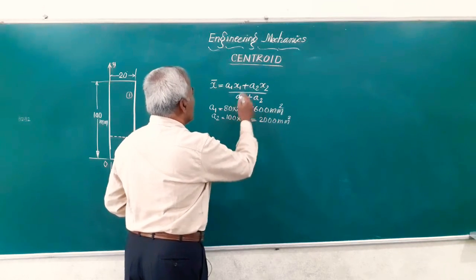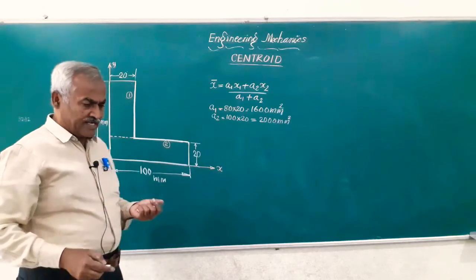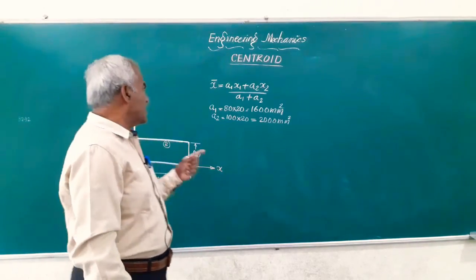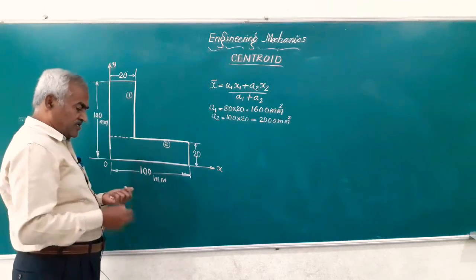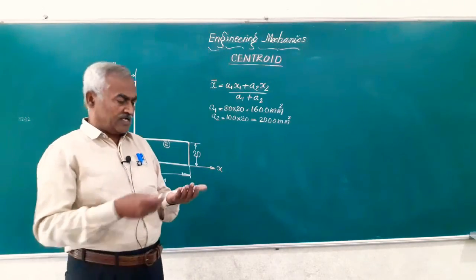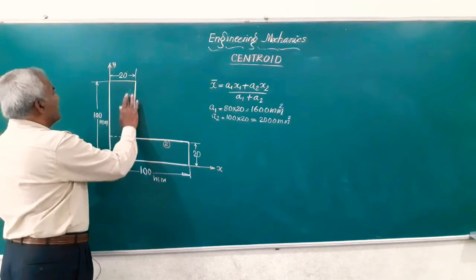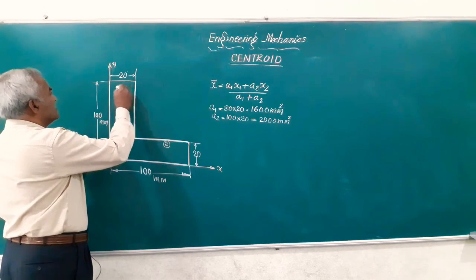Friends, we have this x1 and x2. What is x1 and x2? x1 and x2 are the distance of the centroid measured from the y-axis and we know the procedure that you can get the centroid of the individual figures by joining the diagonals of that rectangle.